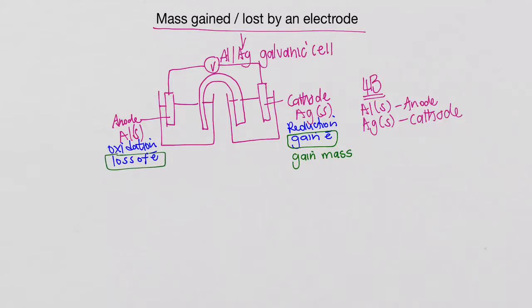And if there's a loss of electrons, like on the left there with the anode, the aluminium anode, we know there's also going to be a loss of mass.